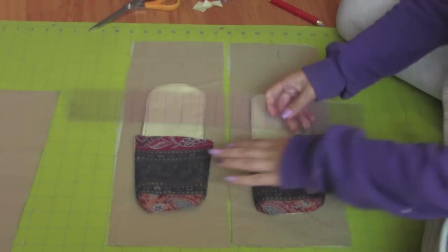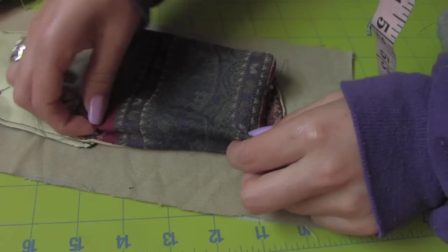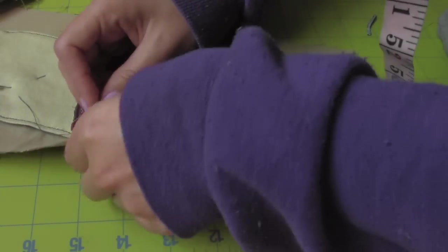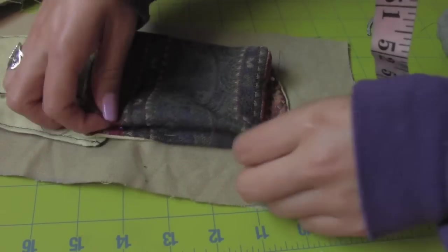Place the pockets 2 inches from the bottom on the exterior side pieces. Fold in the sides, pin and sew.